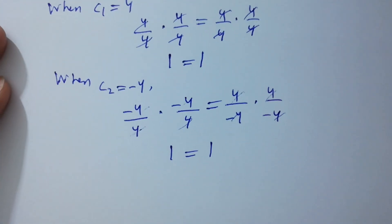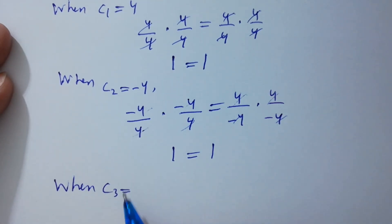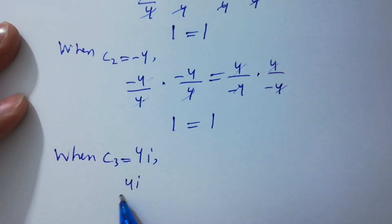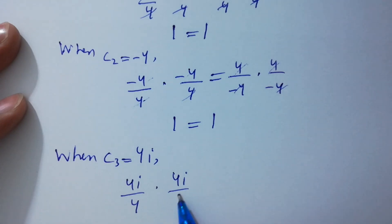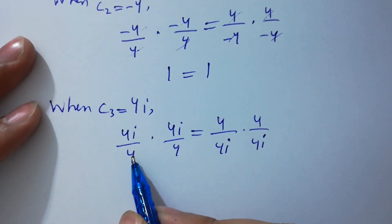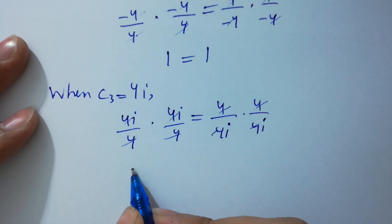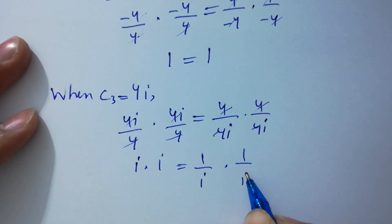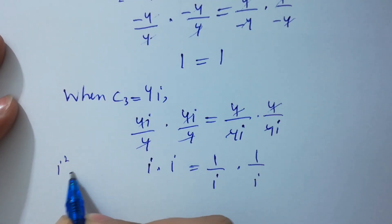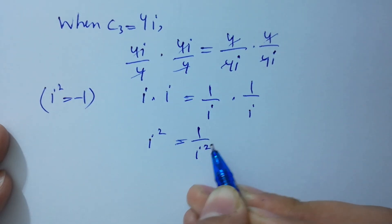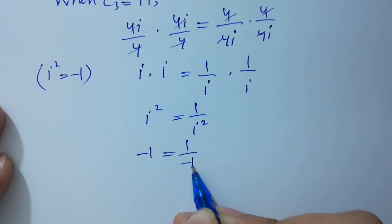Now when c3 equals 4i, we have (4i/4) times (4i/4) equal to (4/4i) times (4/4i). The 4s cancel, giving i times i equal to (1/i) times (1/i). Since i squared equals minus 1 from complex numbers, it will be i squared equals 1 over i squared, which is minus 1 equals 1 over minus 1, giving minus 1 equals minus 1, so c3 equals 4i is correct.